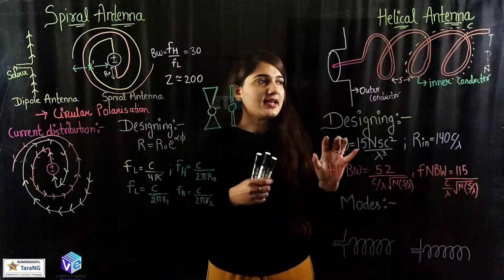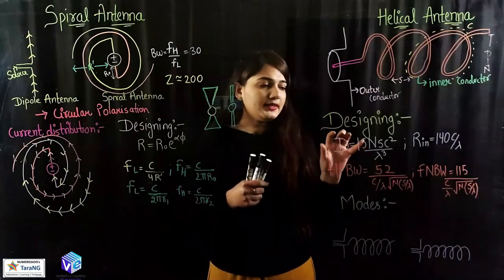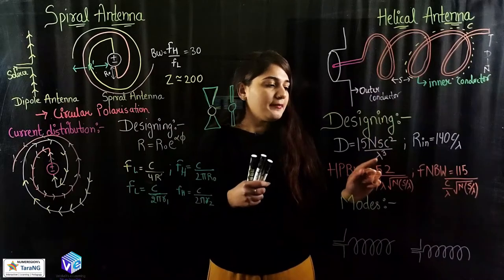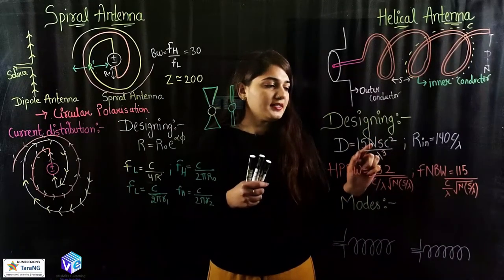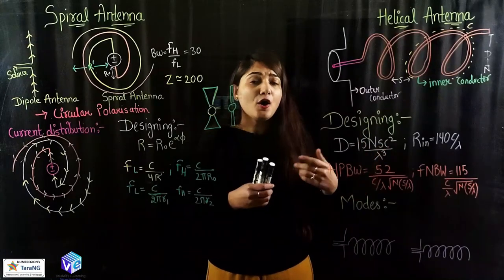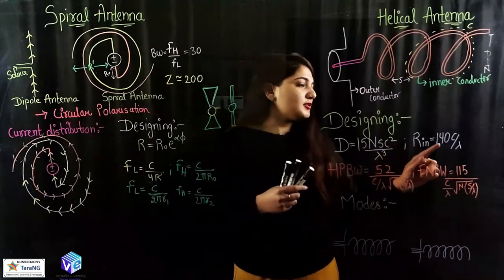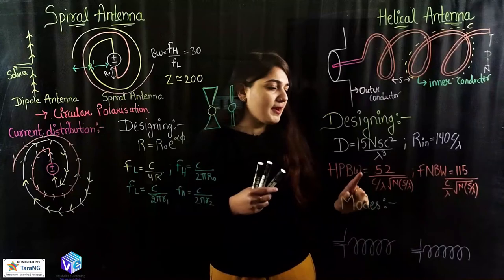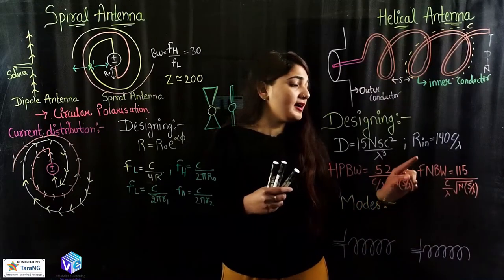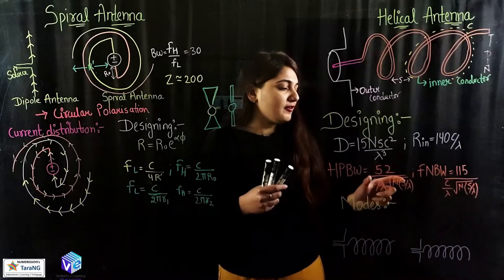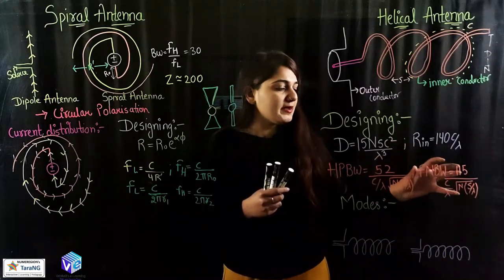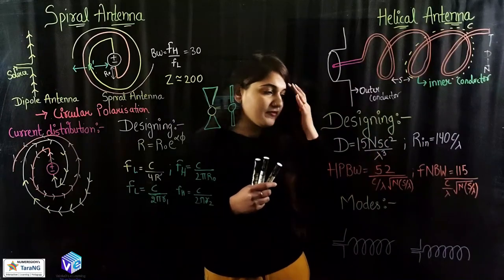Coming to the designing — we can find out the directivity. The directivity is equal to 15N times C² upon λ³, where N is the number of turns, S is the spacing, C is the circumference, and λ is the operational wavelength. The input resistance Rin is 140C upon λ. Half-power beam width is 52C upon λ under root of N times S upon λ. First-null beam width has a similar formula but with 115 in the numerator instead of 52, so first-null beam width is greater than half-power beam width.